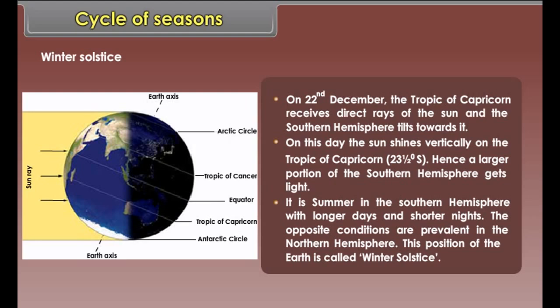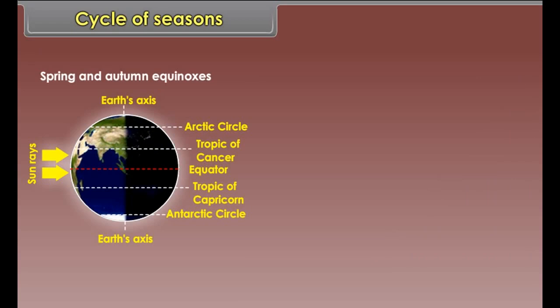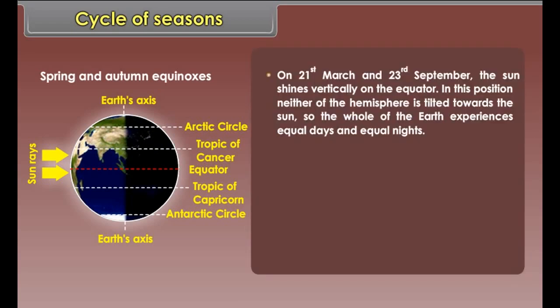Winter solstice. On 22nd December, the Tropic of Capricorn receives direct rays of the sun and the Southern Hemisphere tilts towards it. On this day, the sun shines vertically on the Tropic of Capricorn, 23 and a half degrees south. Hence, a larger portion of the Southern Hemisphere gets light. It is summer in the Southern Hemisphere with longer days and shorter nights. The opposite conditions are prevalent in the Northern Hemisphere. This position of the earth is called winter solstice.